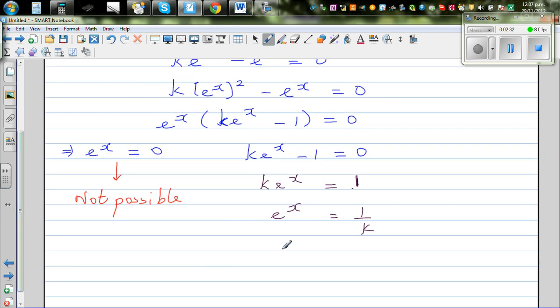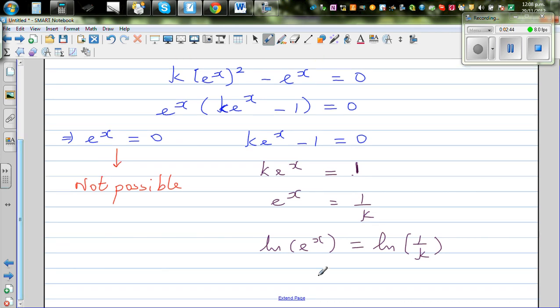Now taking log of both sides, natural log of e to the power x equals natural log of 1 over k. Using the log rule, this is x times natural log of e equals natural log of 1 over k.